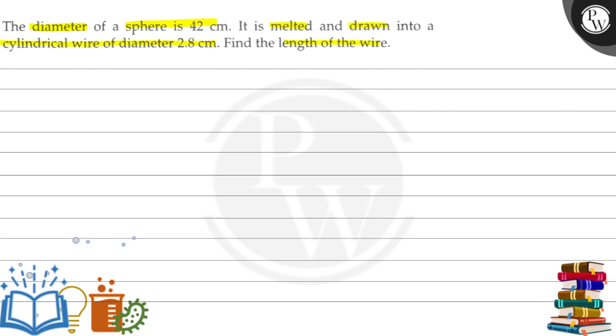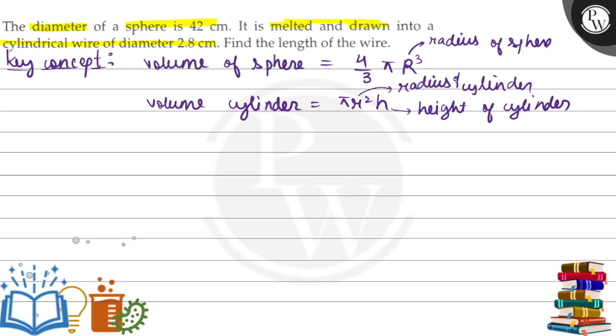The key concept for this question is: volume of sphere equals 4 by 3 pi R cubed, and volume of cylinder equals pi r squared h. Here, r is the radius of the cylinder, h is the height of the cylinder, and capital R is the radius of the sphere.